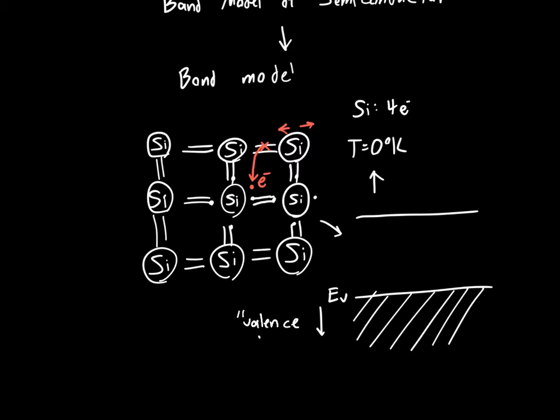And the reason we call it the valence band is just because silicon's valence electrons are its outermost electrons that participate in bonding and that are responsible for all of its chemical properties.